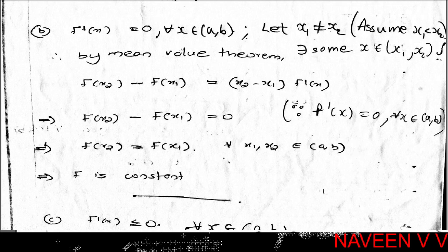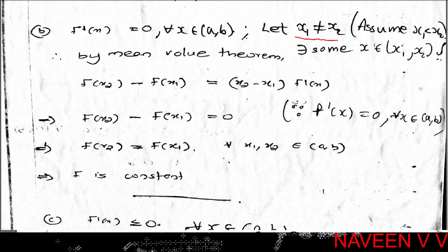Assume f'(x) = 0 for all x in open interval (a, b). We need to prove f is constant. To show this, take any two distinct real numbers x1 and x2 in open interval (a, b) and prove f(x1) = f(x2). Without loss of generality, assume x1 < x2. The case x2 < x1 uses the same argument.